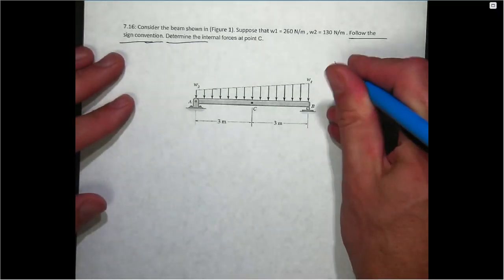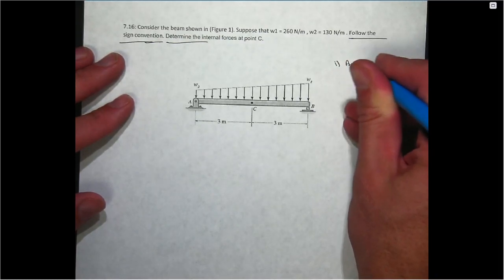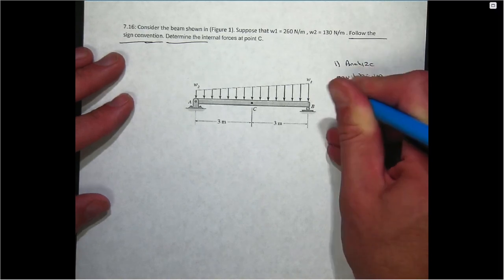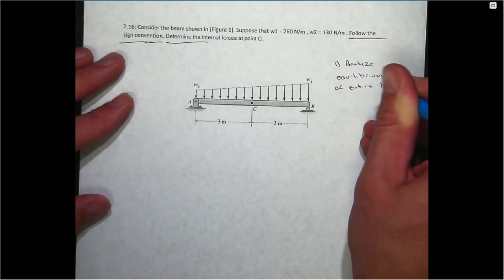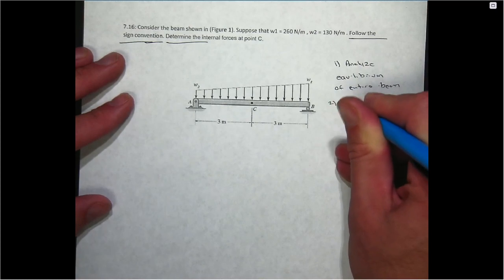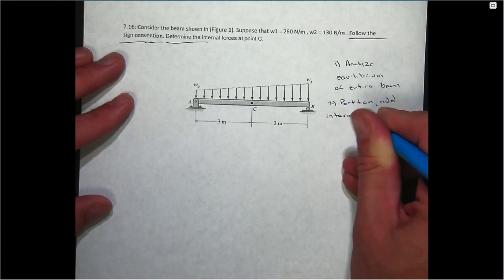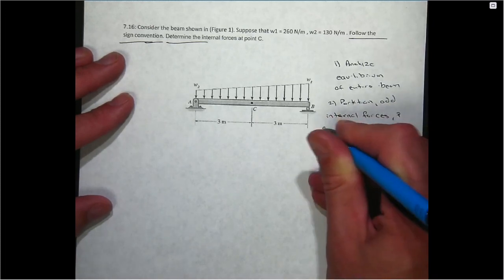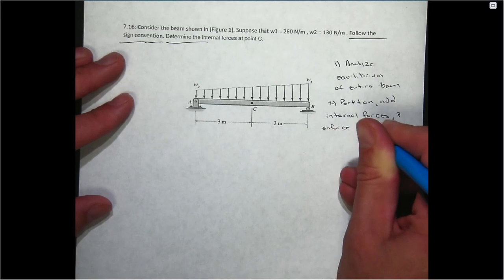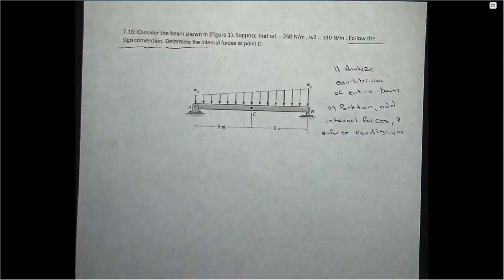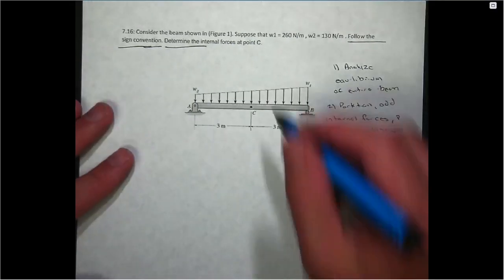As I said in the last video, these all work the same way. Step one, you want to analyze the equilibrium of the entire beam, and then partition and enforce equilibrium again. So it's like you do a statics problem twice, only one time you're doing it on a portion of the beam that contains your internal forces.